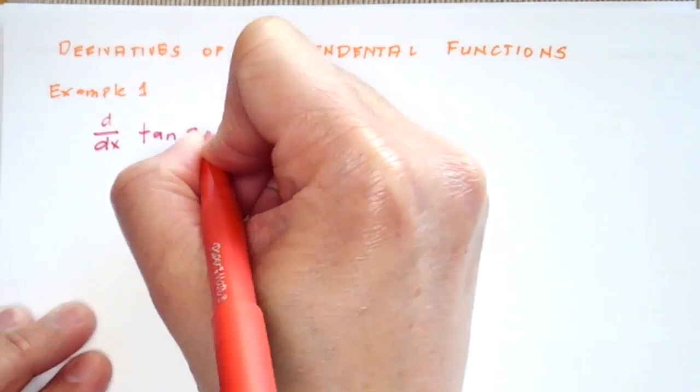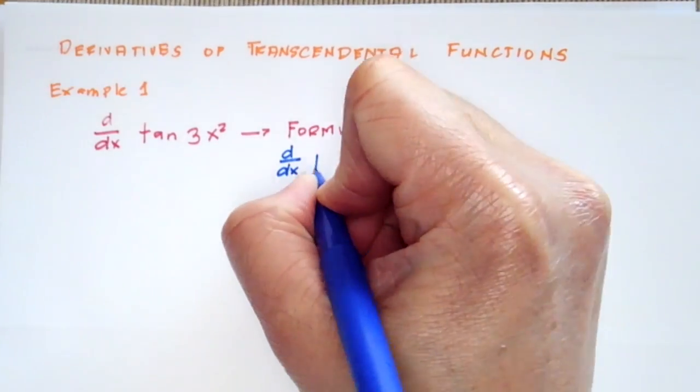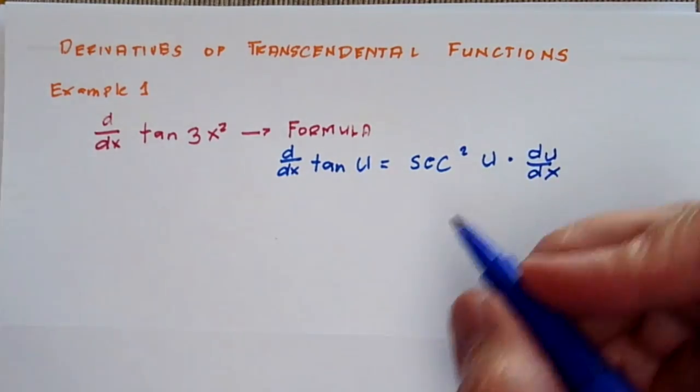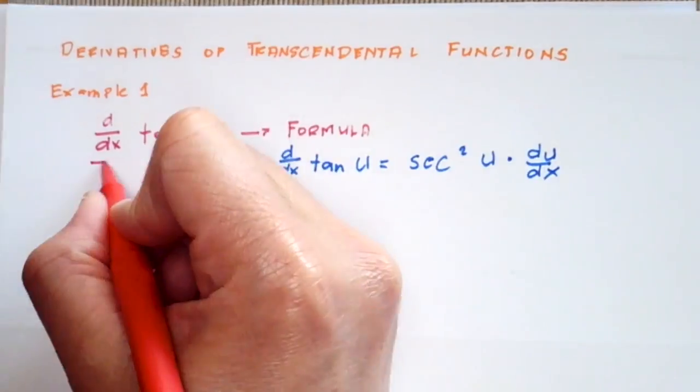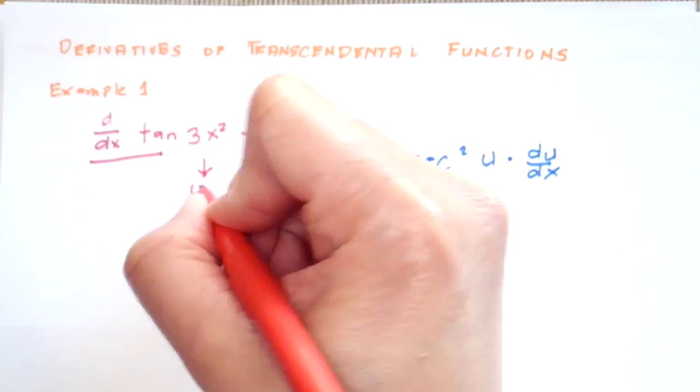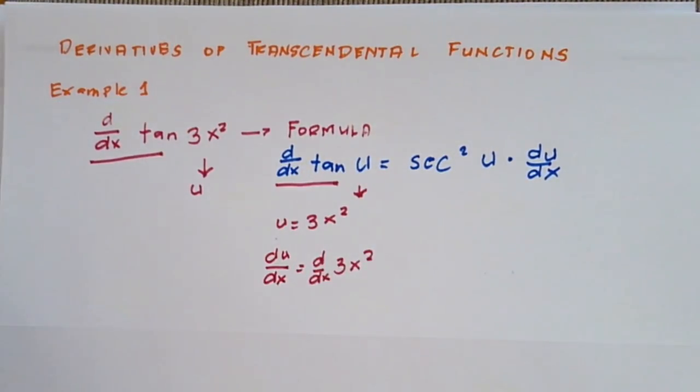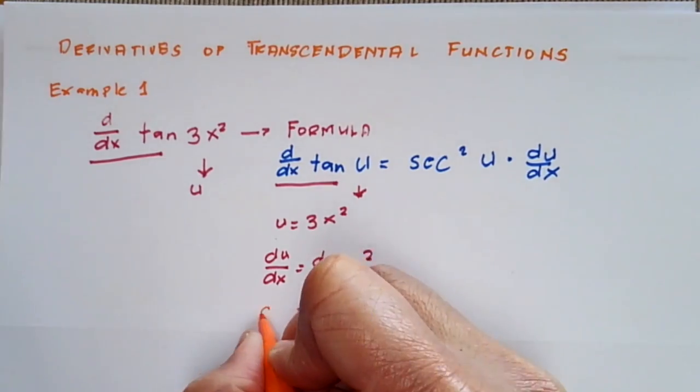If we're going to find the derivative of tangent 3x squared, the formula of finding the derivative of tangent is going to be secant squared u times the du dx, where u is going to be 3x squared, and your du dx is the derivative of u, which is in this case 6x.